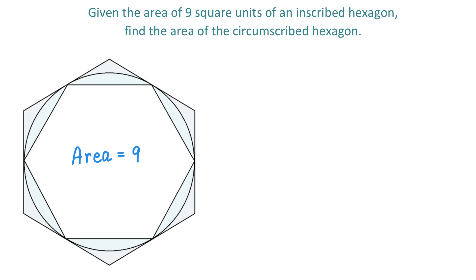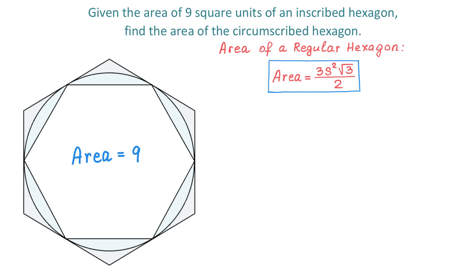The method I will use involves the formula for the area of a regular hexagon. This formula is 3s squared times square root of 3 over 2. A regular hexagon has 6 equal sides and 6 equal angles, and s represents one side.